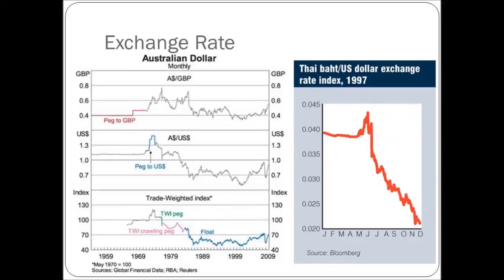We talk about a 10% change in the Australian dollar in a couple of months being huge — theirs halved. There's a huge amount of instability. As it fell, foreign investors realized that their investment in Thailand was now worth less, so they started pulling their money out to prevent further losses. And that caused the currency to fall even further. So it became this spiral. This is the risk you take with floating exchange rates — the instability that it causes.